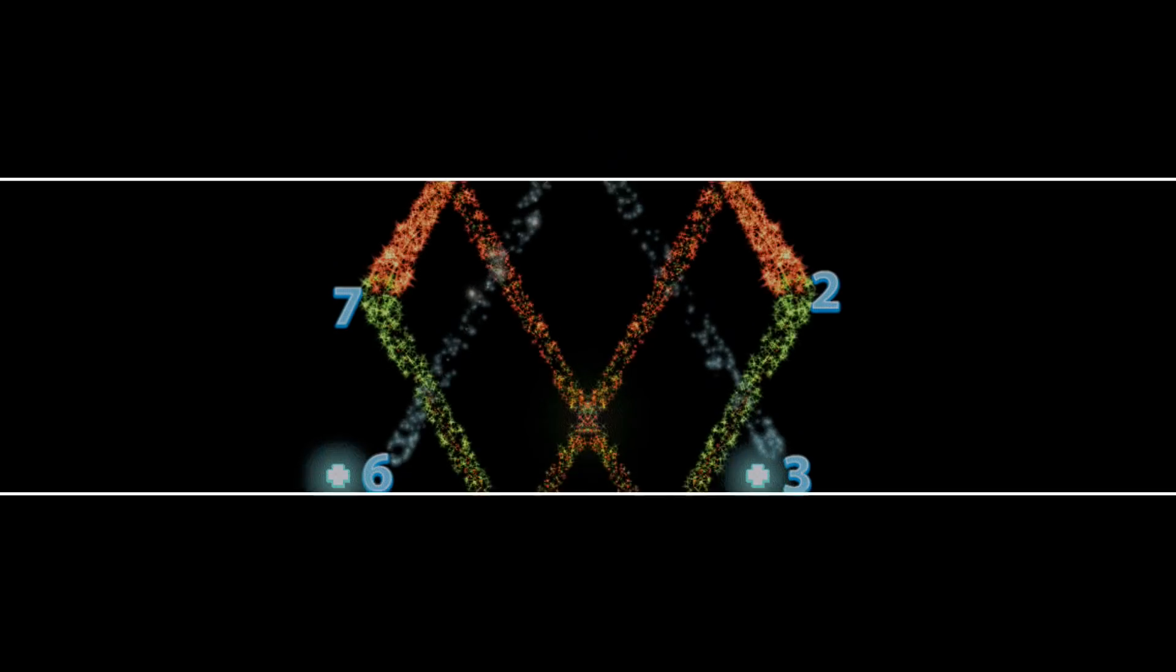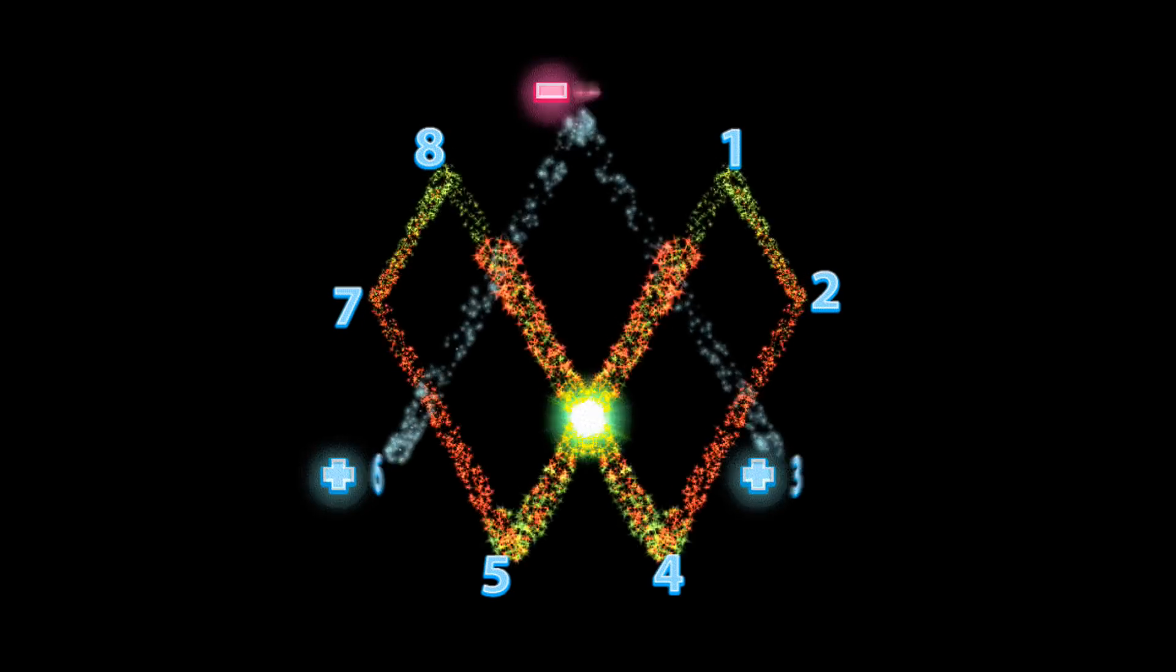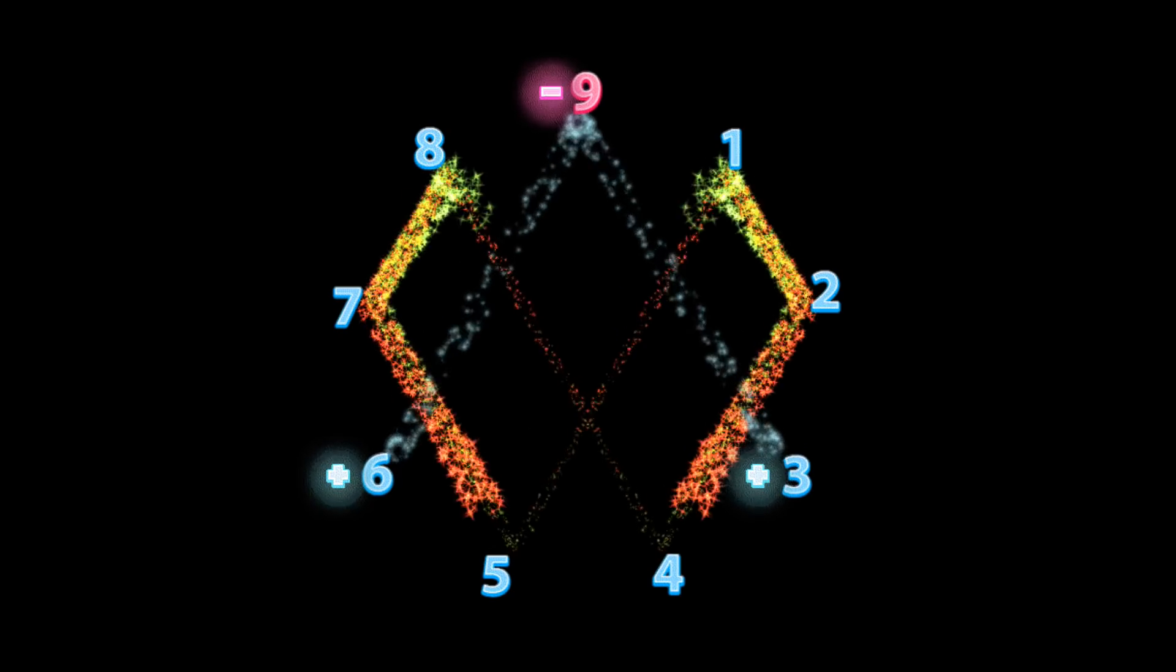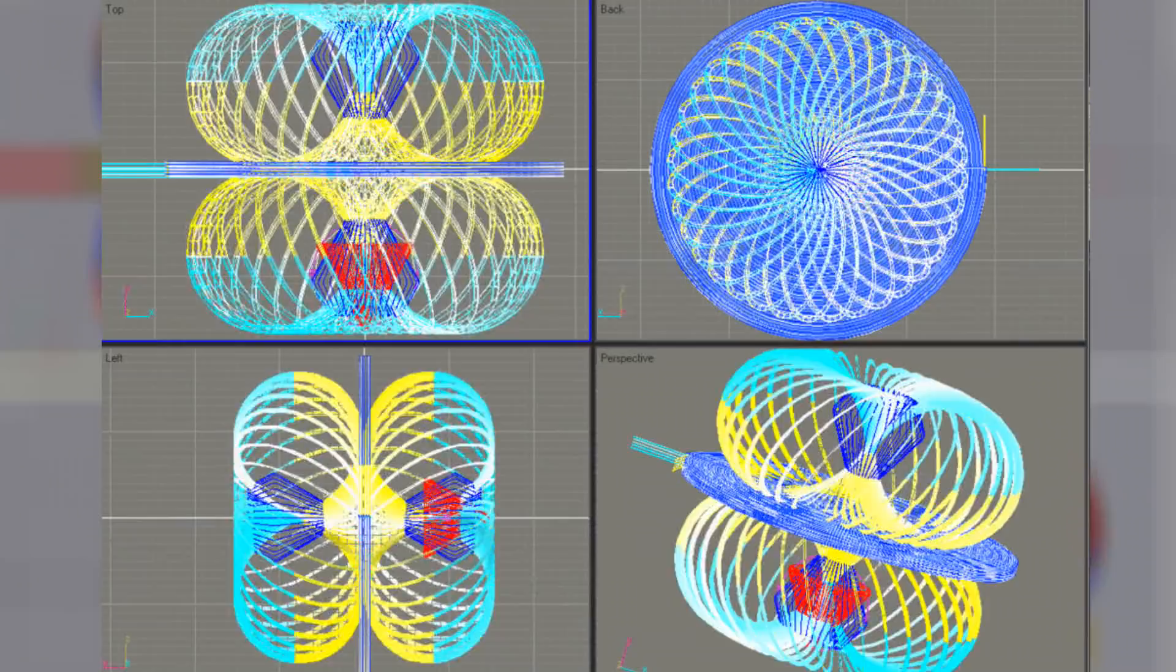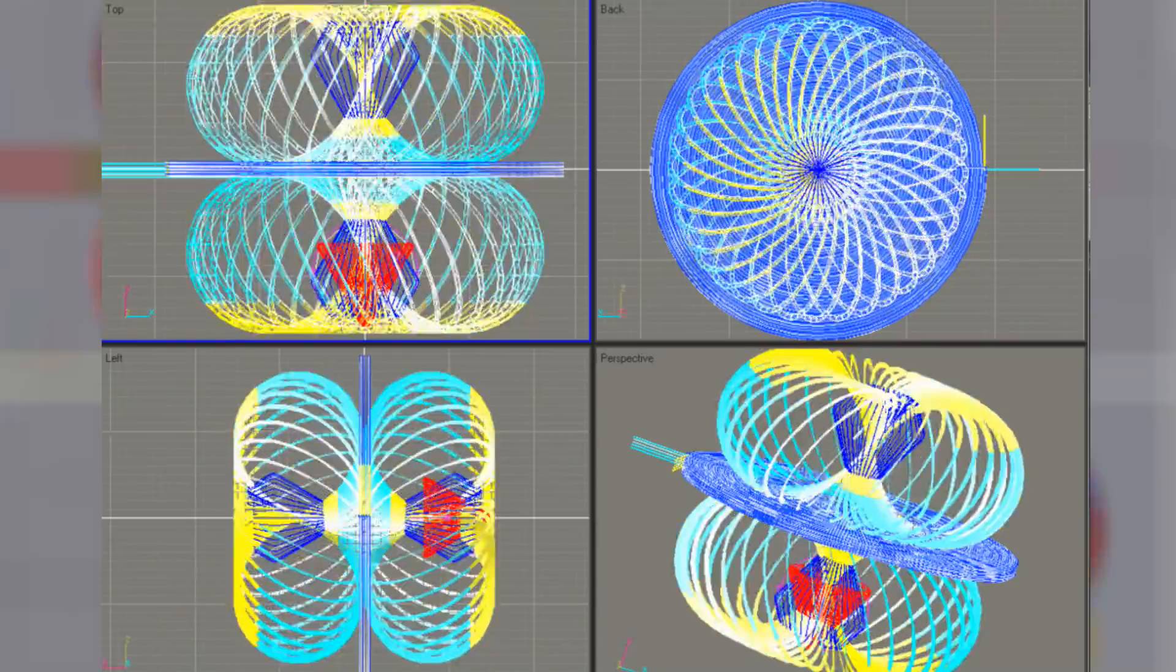Amazingly, after 20 years of working with this symbol, and collaborating with engineers and scientists, Marco discovered that the 1, 2, 4, 8, 7, 5 was a doubling circuit for a very efficient electrical coil. But yet there was still one more very important number pattern to be realized.